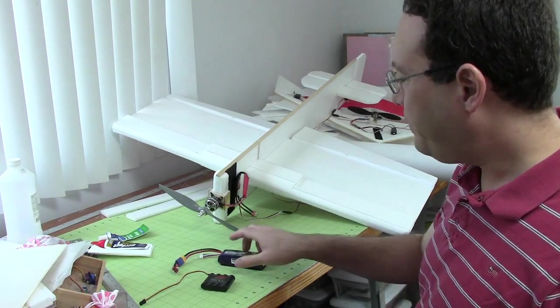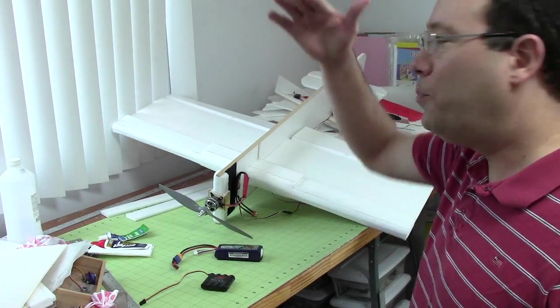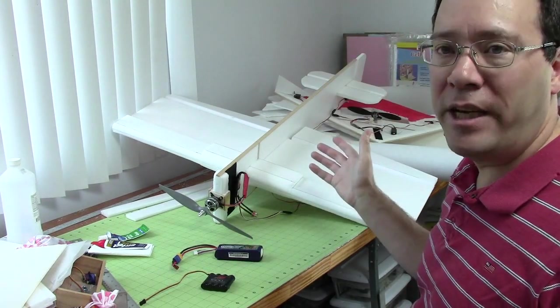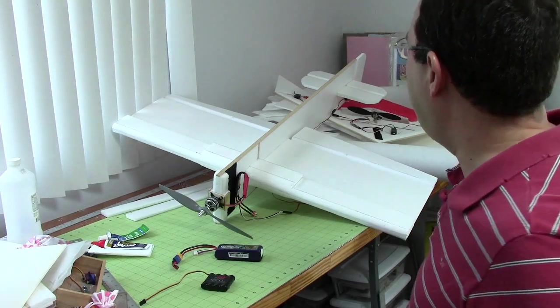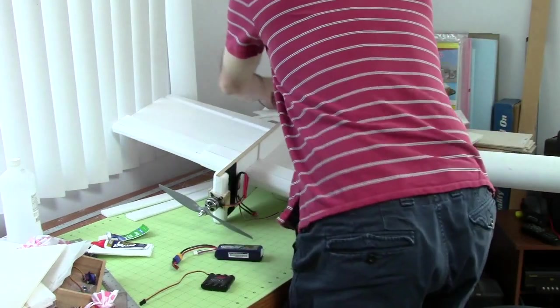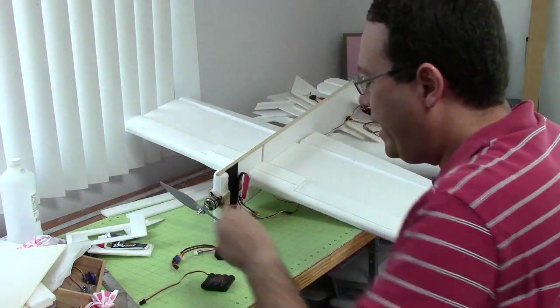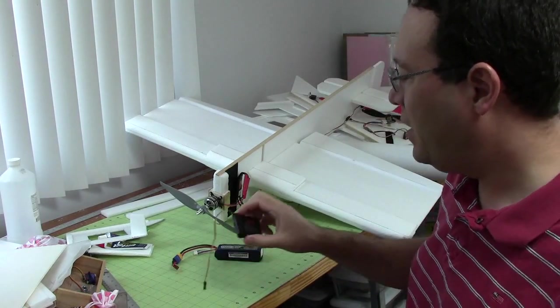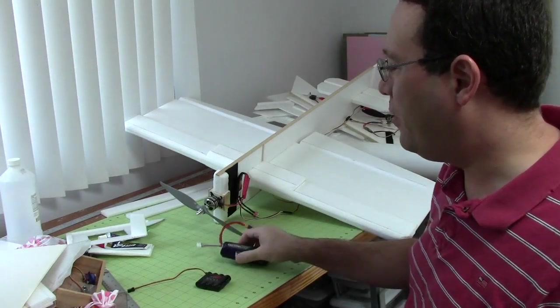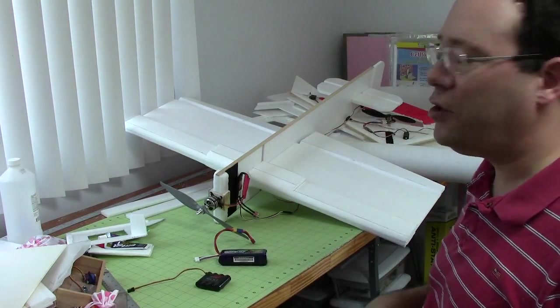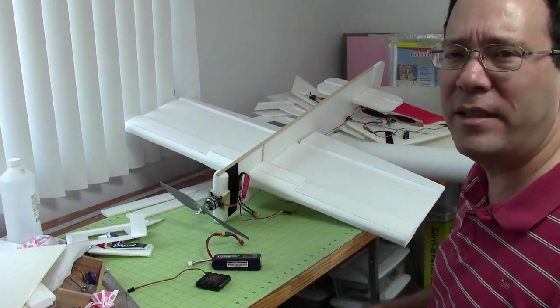So anyway, to do a weight computation is pretty straightforward. It's just a matter of writing down in a list everything that's going into the airplane. And there are two types of components that go into airplanes. One component is what I call discrete components, like this battery or this other battery or a motor or a servo. And these are things that you buy. And it's pretty easy to know how much they weigh because when you buy them, they'll probably tell you.